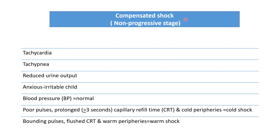In compensated shock, also called non-progressive stage, the patient will have tachycardia — heart rate will be increased — and tachypnea — respiratory rate will be increased. Urine output will be reduced; normal urine output in children is more than 1 ml per kg per hour, so less than 1 ml is labeled as reduced urine output. The patient will be irritable and anxious. BP will remain normal during this stage — we should remember BP remains normal in compensated shock. The patient will have poor pulse, prolonged capillary refill time equal to or more than 3 seconds, and cold peripheries — labeled as cold shock.